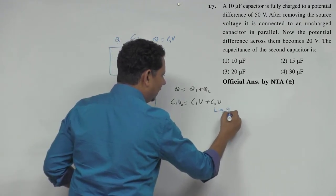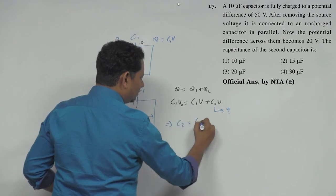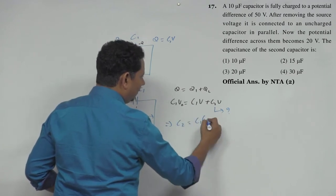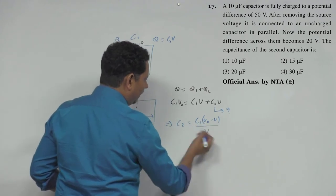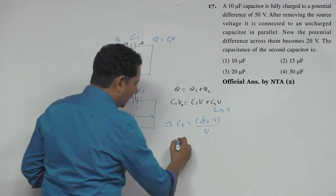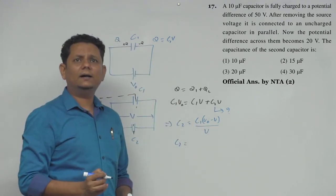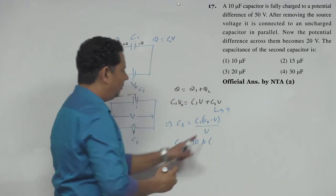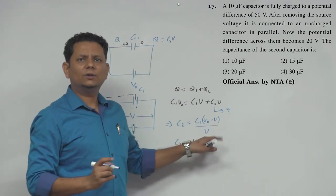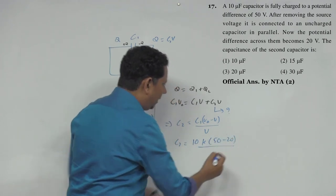Data आपने को दे रखा है. हमें बाकी सारी चीज़ें पता है, हमें C2 की value बतानी है. यह C2 जो है यह आपका unknown है. Which implies इसको हम लिख सकते हैं: C2 will be equal to C1 times (V naught minus V) divided by V.